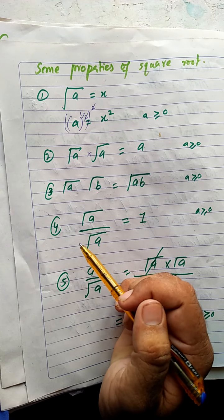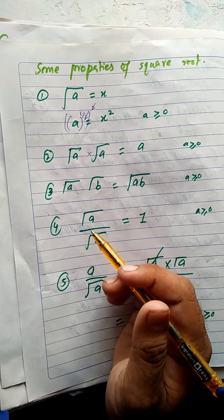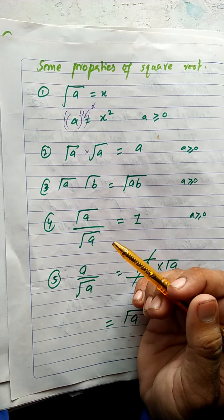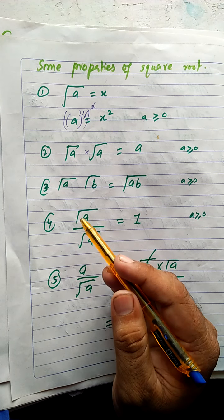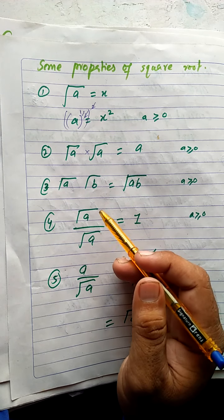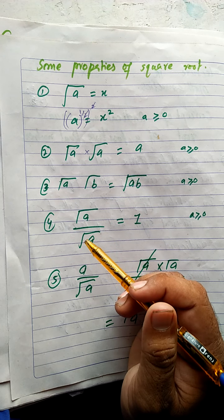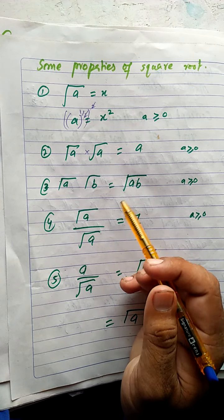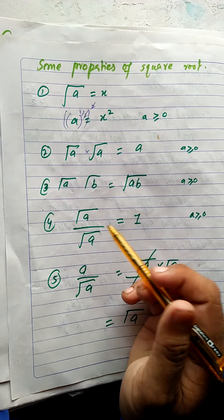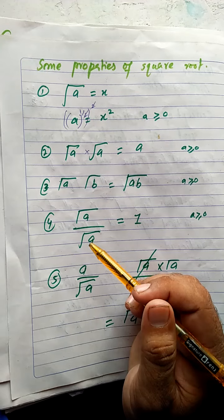Property number four: radical a divided by radical a. Since the bases are the same, they cancel directly. Alternatively, using exponents: a^(1/2) ÷ a^(1/2) = a^(1/2 - 1/2) = a^0 = 1. Both methods give the same result — the expression equals one.